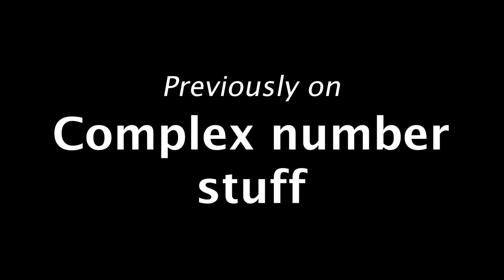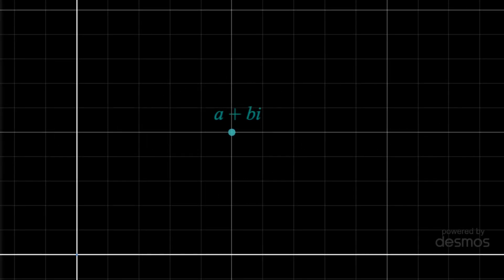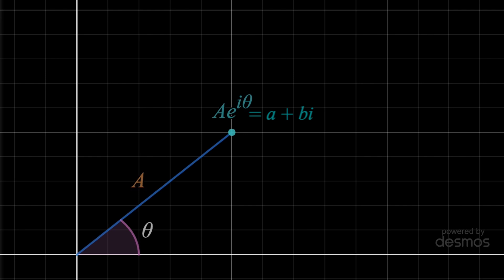In the last video, we saw that any complex number can be written in terms of its magnitude, or distance from the origin, and phase, or angle from the positive x-axis, through Euler's formula, Ae to the i-theta. To start this video, let's use that to solve a fairly popular geometry puzzle.